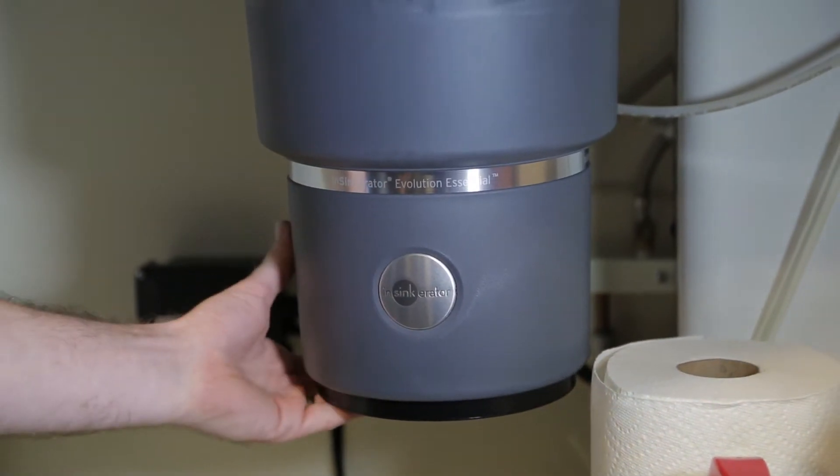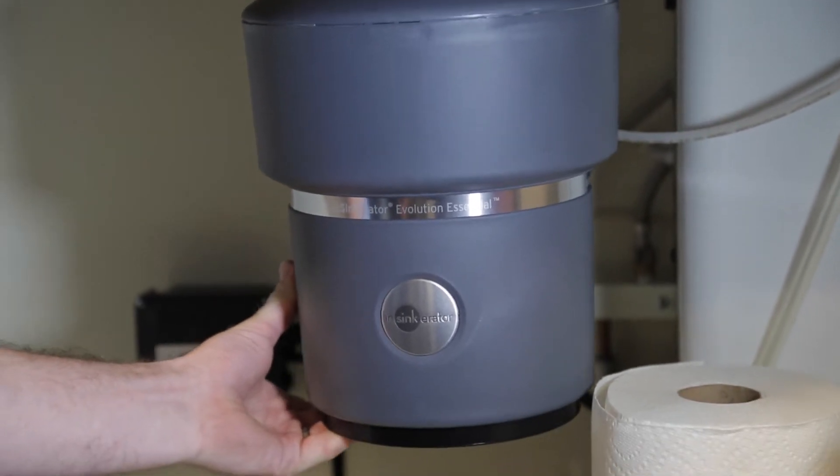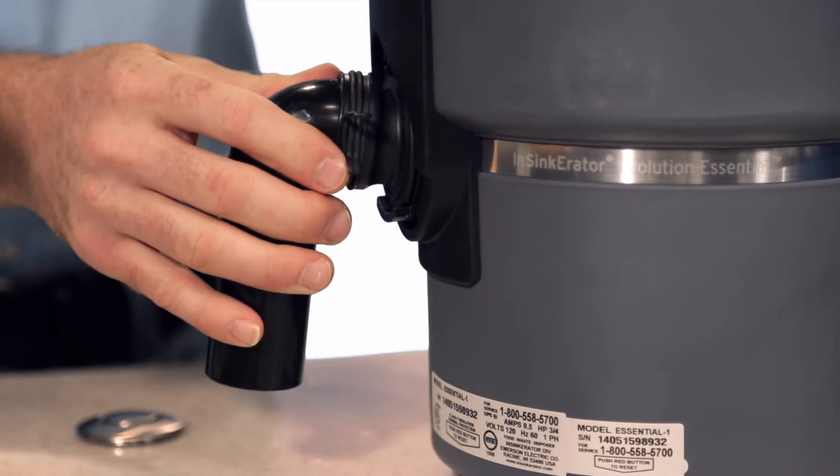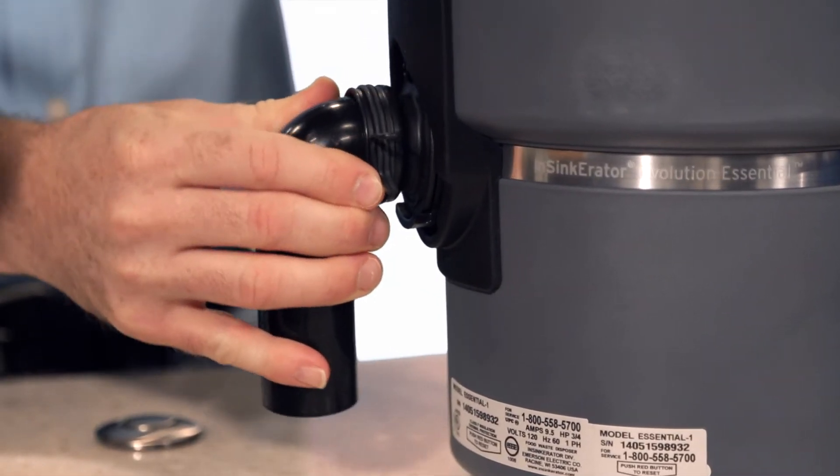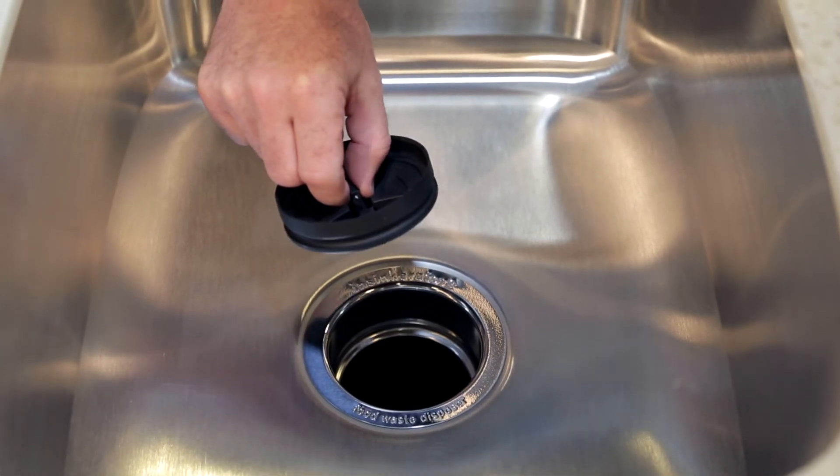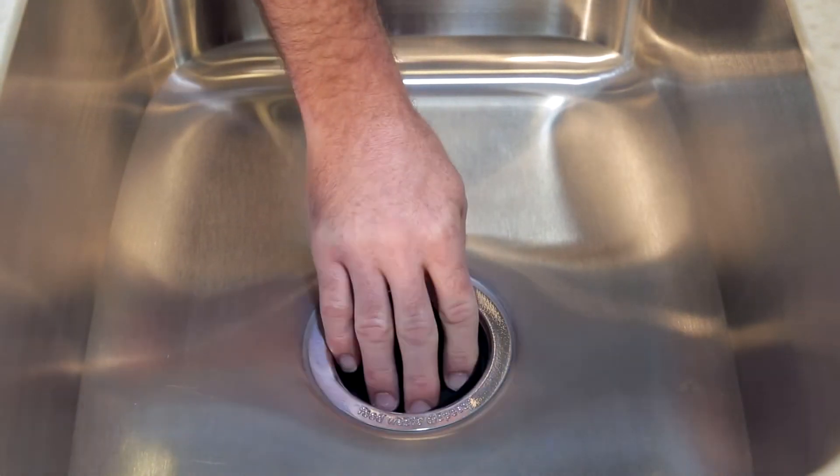The sound-reducing technology built into Essential includes flexible rubber fittings at the sink and plumbing connection, which eliminate the vibrations that cause noise. Essential also has a specially designed baffle that creates a thin water dam over the sink opening to block noise from coming up through it.